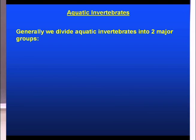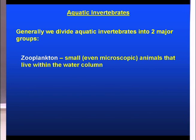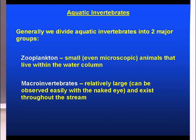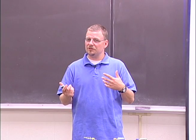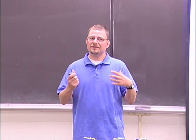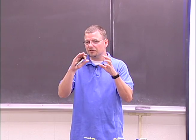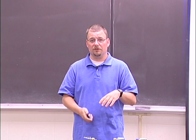Generally when we group aquatic invertebrates we can do so into two major groups. We have the zooplankton, which are basically small, maybe even microscopic organisms — primarily animals that live within the water column; that is, they swim within the water itself. Then we have the macroinvertebrates, which we'll spend most of our time on. Macroinvertebrates are relatively large, meaning we can normally see them with the naked eye, and they exist throughout the stream system — not just limited to the water column, but also on the surface and on the bottom.